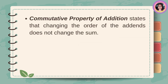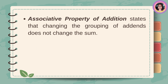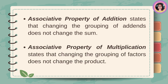Commutative property of addition states that changing the order of the addends does not change the sum. Commutative property of multiplication states that changing the order of the factors does not change the product. Associative property of addition states that changing the grouping of addends does not change the sum. Associative property of multiplication states that changing the grouping of factors does not change the product.